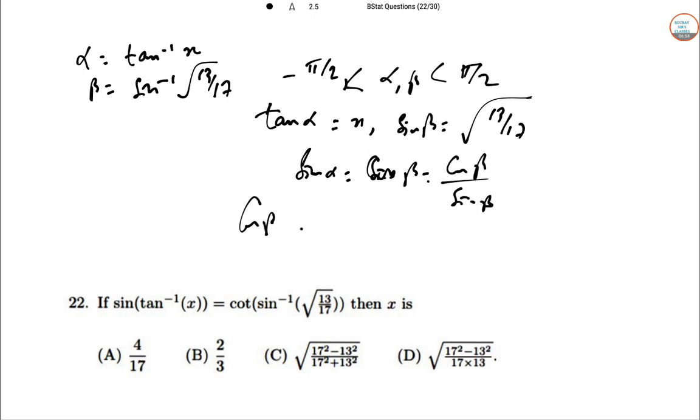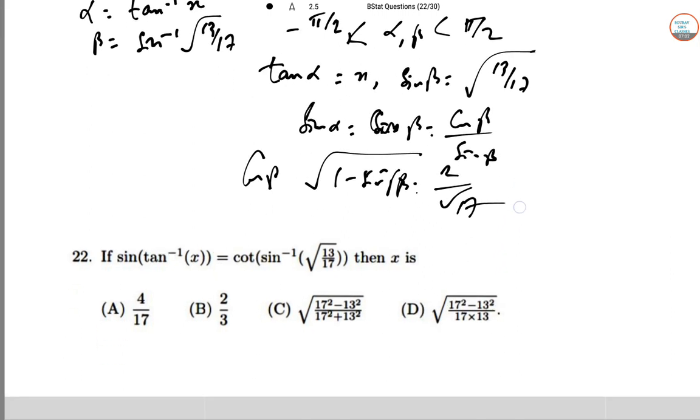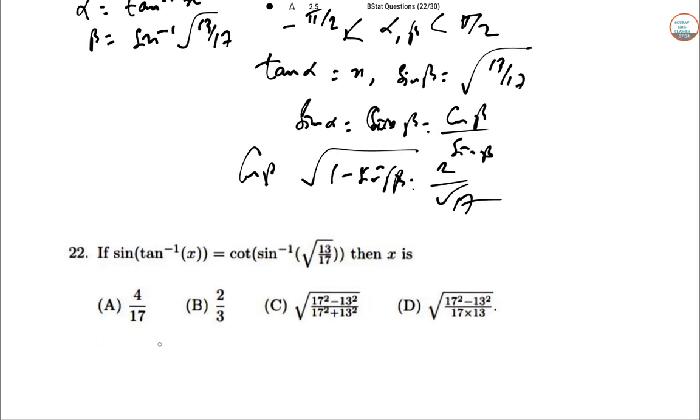cos β = √(1 - sin²β) = 2/√17. sin α = cos β = 2/√13. cos α = √(1 - sin²α) = 3/√13.